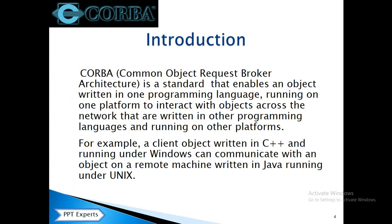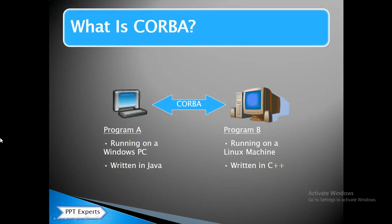CORBA is a standard that enables one object written in one programming language running on one platform to interact with objects across the network that are written in other programming languages and running on other platforms. The programming language could be any — C, C++, Java, etc. For example, program A is written in Java and program B is written in C++, so CORBA binds the gap and allows them to communicate with each other.